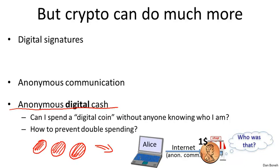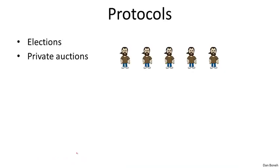It turns out this is completely doable, and we'll talk about anonymous digital cash later on. The way we do it is by making sure that if Alice spends the coin once, then no one knows who she is. But if she spends the coin more than once, all of a sudden her identity is completely exposed, and she could be subject to all sorts of legal problems. That's how anonymous digital cash works at a high level.